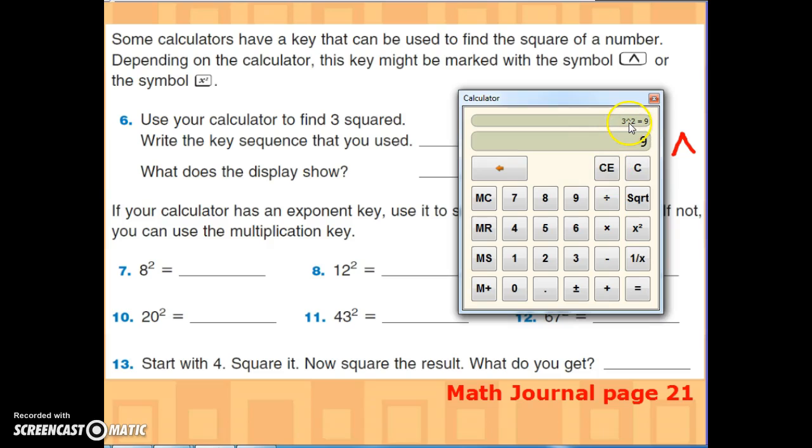And so you'll record that information for number six. Then you'll move on to seven through twelve and you'll do the same thing. It's really just practicing with your calculator. So if I clear it and I do eight squared, my answer is 64. And so I will write 64 on the line. So 64 is a square number.